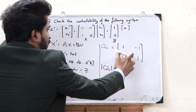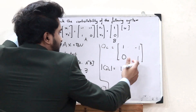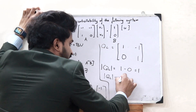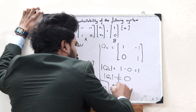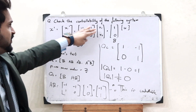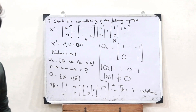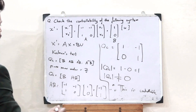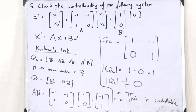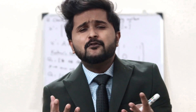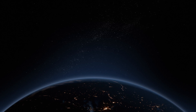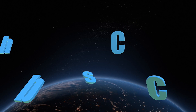Therefore, the value of the determinant of this particular matrix is not equal to 0. Therefore, this is a controllable system. This particular control system represented by this state equation is a controllable control system. This is simply how you check the controllability of a particular control system using Kalman's test. I hope you guys now have a clear understanding of how to find controllability using Kalman's test.